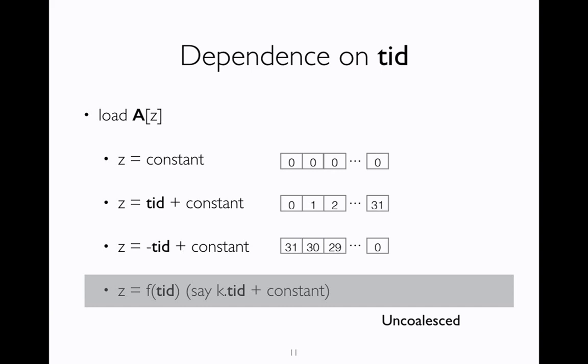So this is the high-level idea: we want to compute the dependence of index variables on thread ID. To do this, we define an abstraction in our analysis where we track four kinds of values for each of the variables: whether the variable is a constant, whether it has a unit dependence on thread ID, or whether it has an arbitrary dependence on thread ID given by this last symbol top.